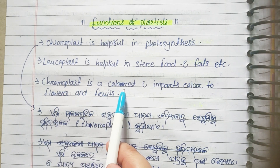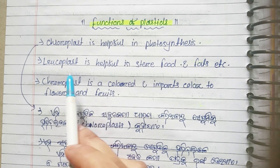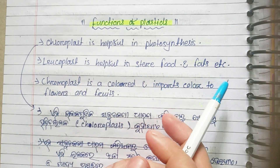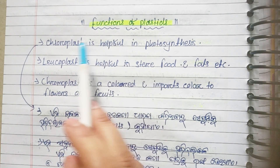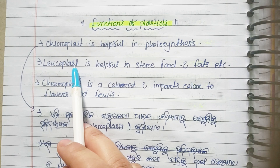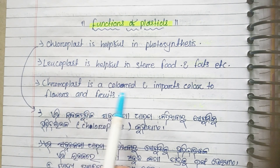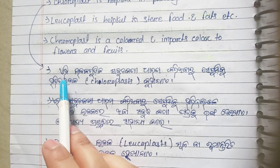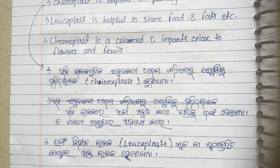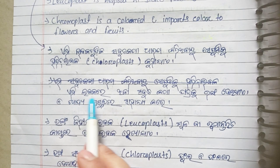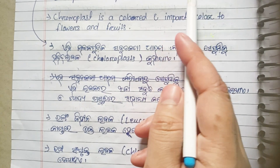Chromoplasts give color. Chloroplasts help with photosynthesis and provide green color. Leucoplasts are colorless. Chromoplasts are colorful. Leucoplasts can also help with photosynthesis — wait, leucoplasts are colorless and chloroplasts help with photosynthesis.